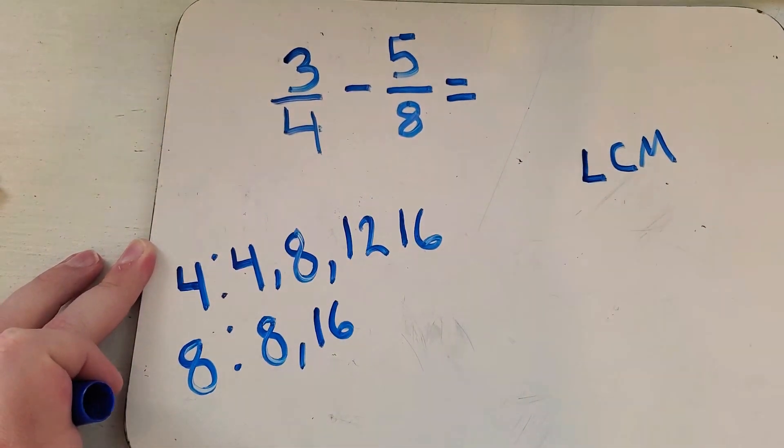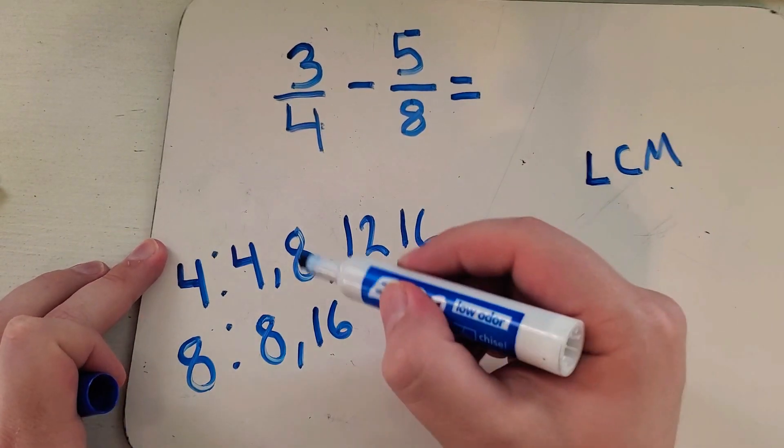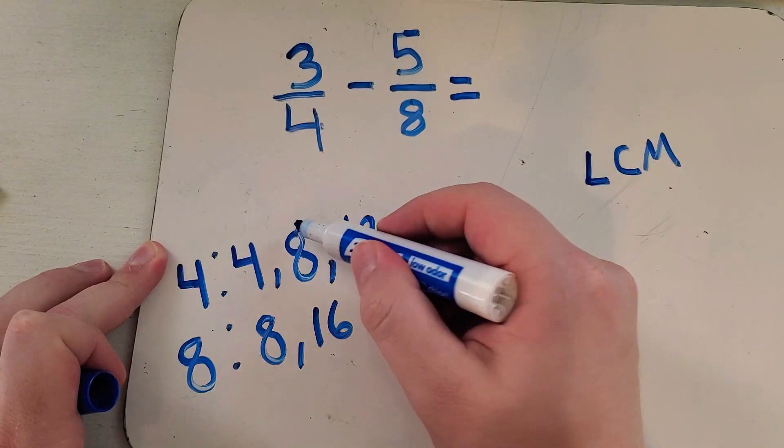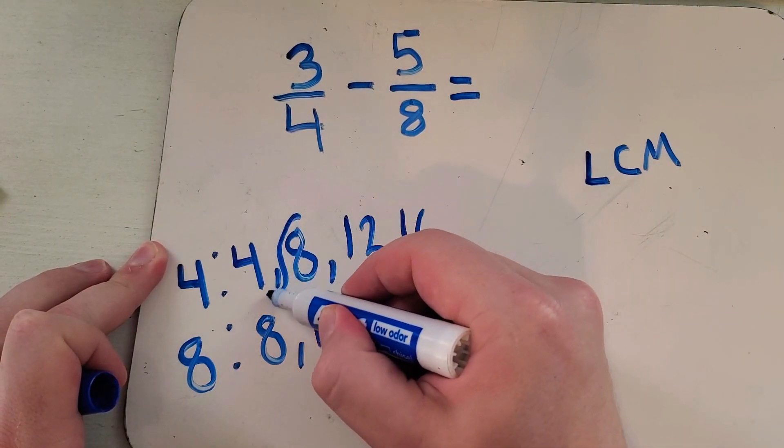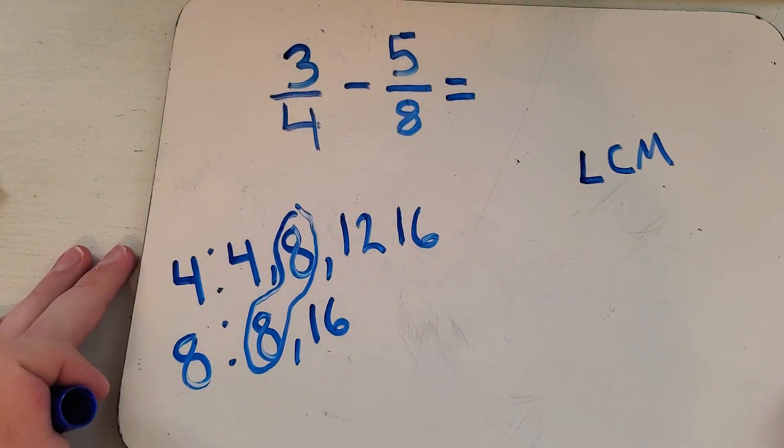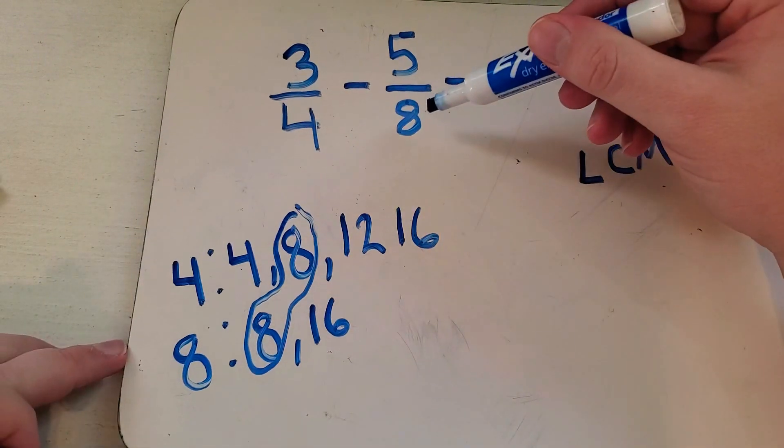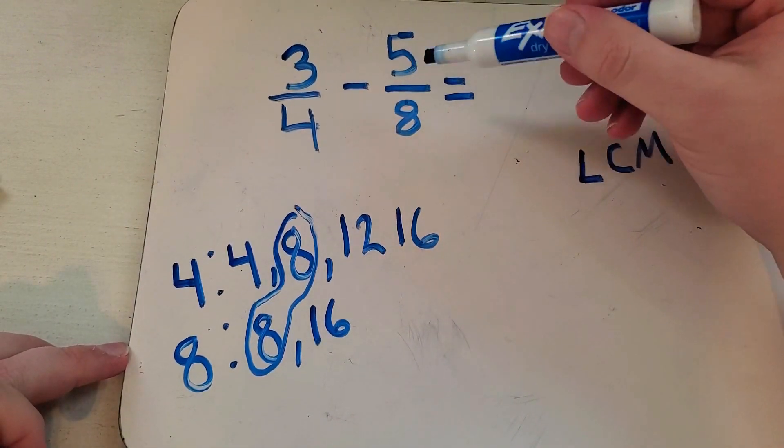And I can honestly stop there because I already see a common multiple that I have. The smallest common multiple they have is eight - they have eight in common. So all we got to do is make both denominators be eight. Luckily this one's already eight, so we don't have to change anything with this number.